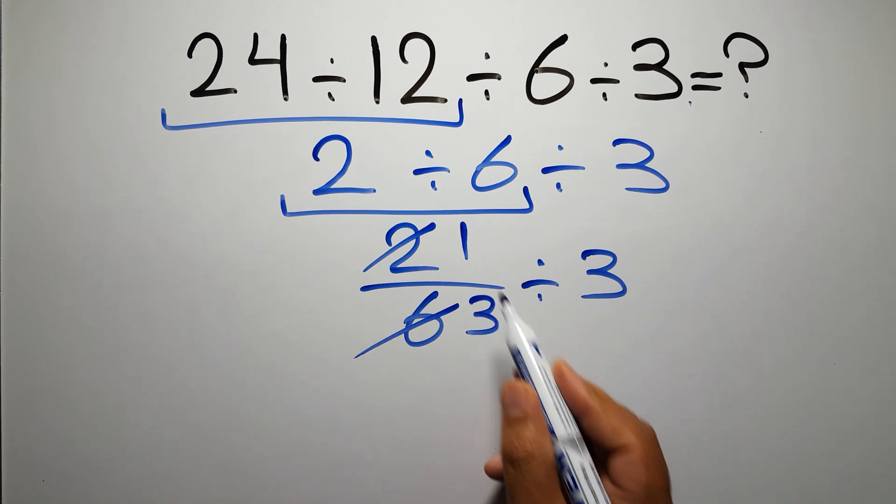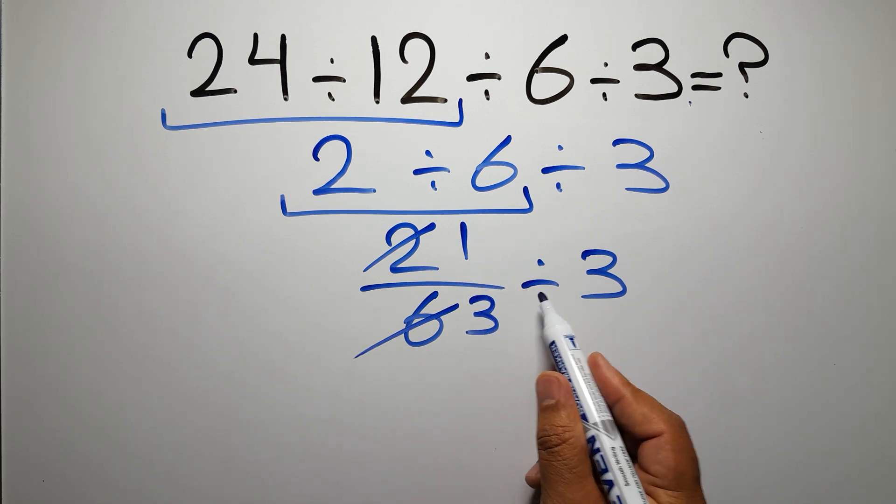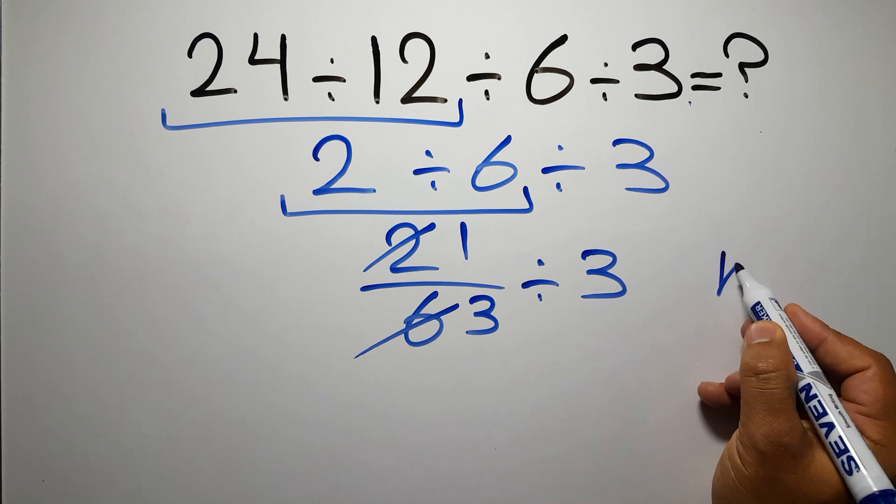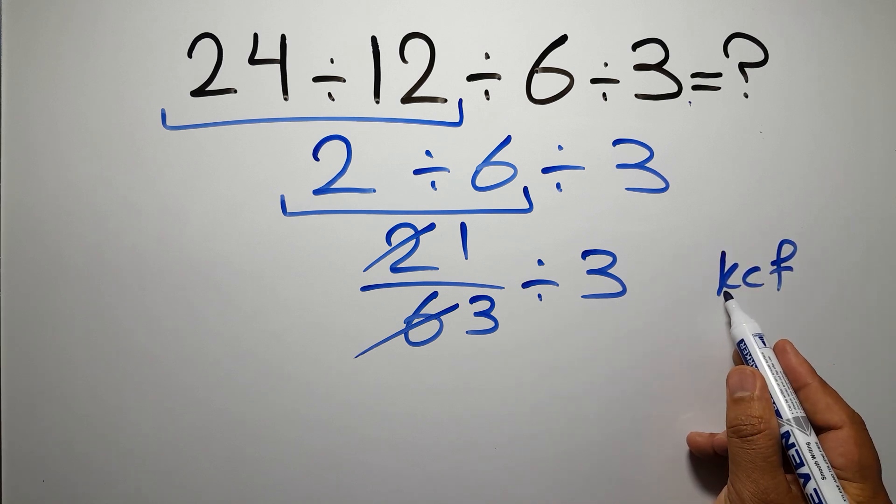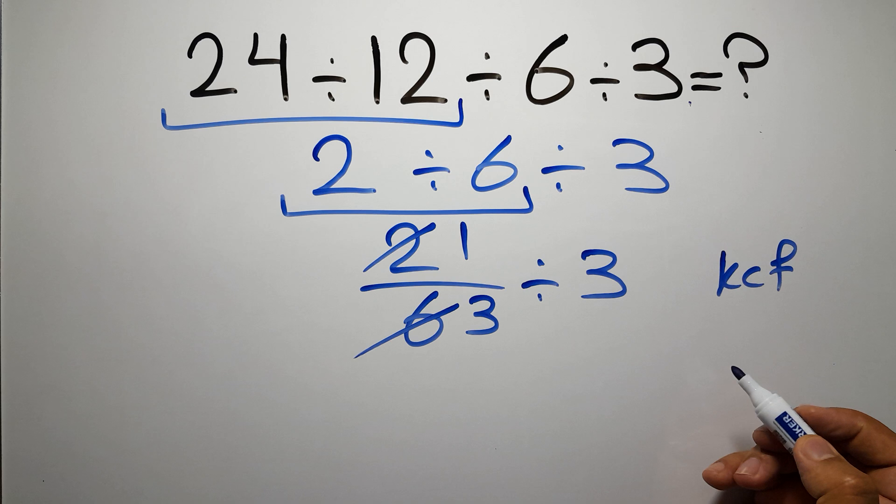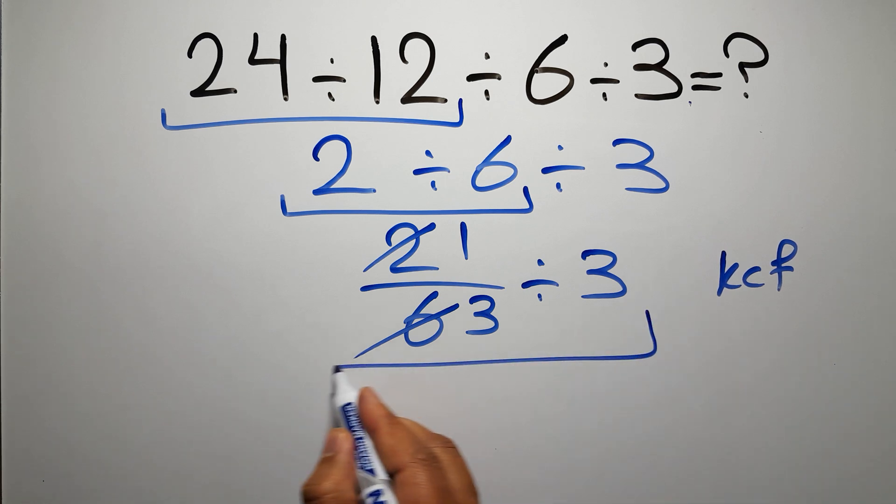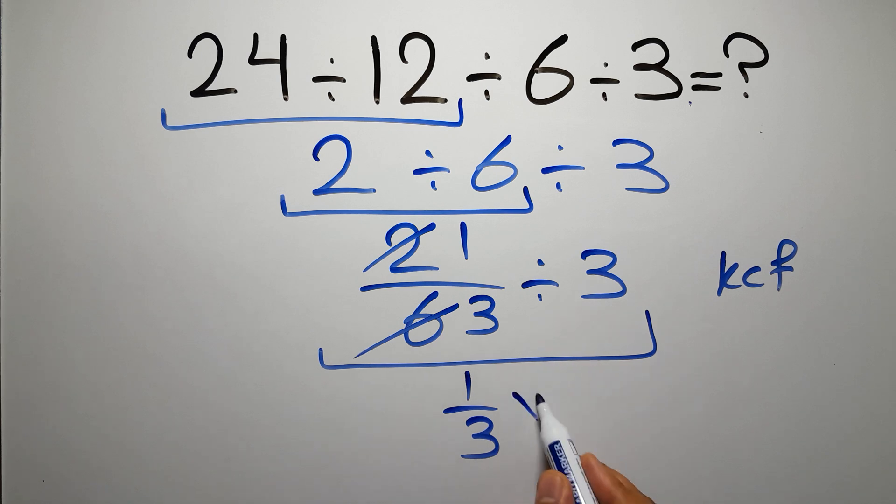According to the KCF rule, K stands for keep, C stands for change, and F stands for flip. We can write: keep the first fraction, change the division to multiplication, and flip the second fraction.